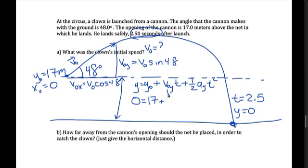He starts at a height of 17 meters. V naught y is equal to v naught times the sine of 48 times the time, which is 2.5 seconds, plus the acceleration term 1 half negative 9.8 times 2.5 squared.